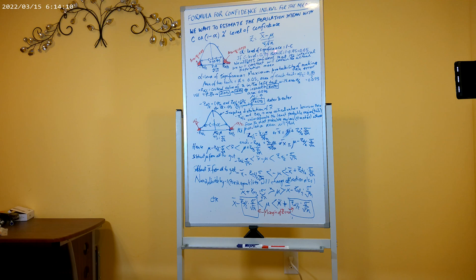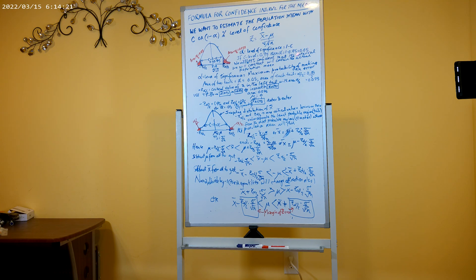The C level is the confidence level that we select. C is equal to 1 minus alpha, where alpha is called the level of significance. If the C level is 0.95, then alpha is 1 minus C, or 1 minus 0.95, which equals 0.05.